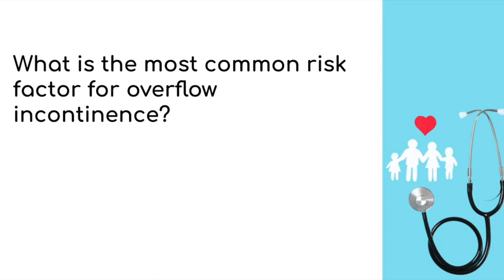What is the most common risk factor for overflow incontinence? Diabetes. Knowing the different types of urinary incontinence is extremely important. It's also important to know the risk factors for each type. For overflow incontinence, the most common is diabetes. Multiple sclerosis is associated with urge incontinence, and age and multiple vaginal deliveries are associated with stress incontinence.